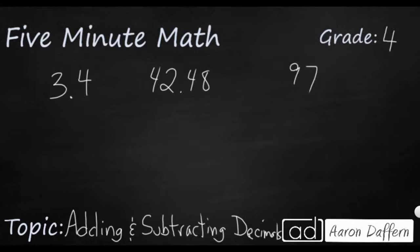So right now you've got three different numbers on this screen: 3 and 4 tenths, 42 and 48 hundredths, and 97. The key is to always line up the decimal. And what's going to happen is you're going to have some digits kind of sticking out, hanging out in space, and that's perfectly fine.